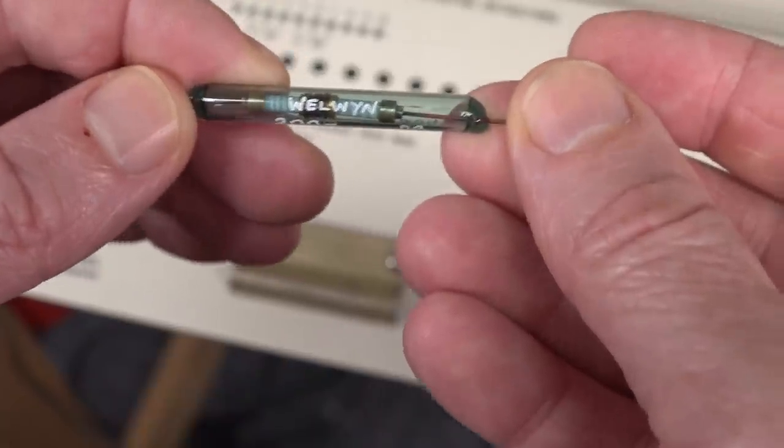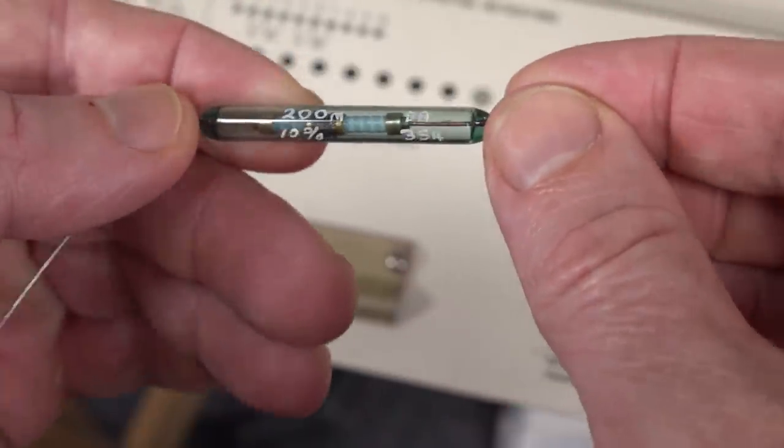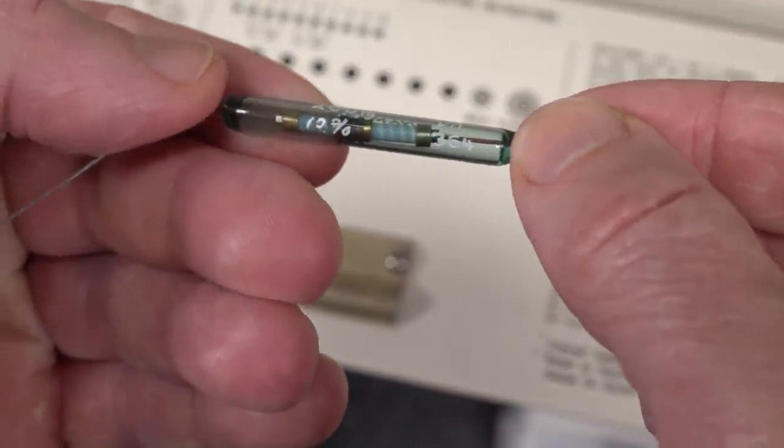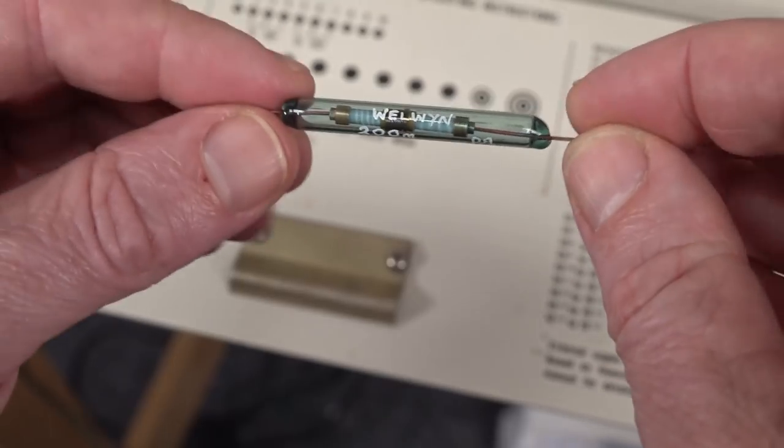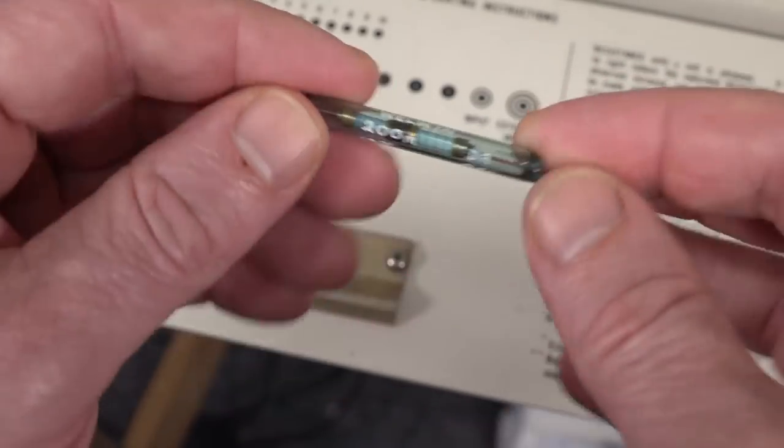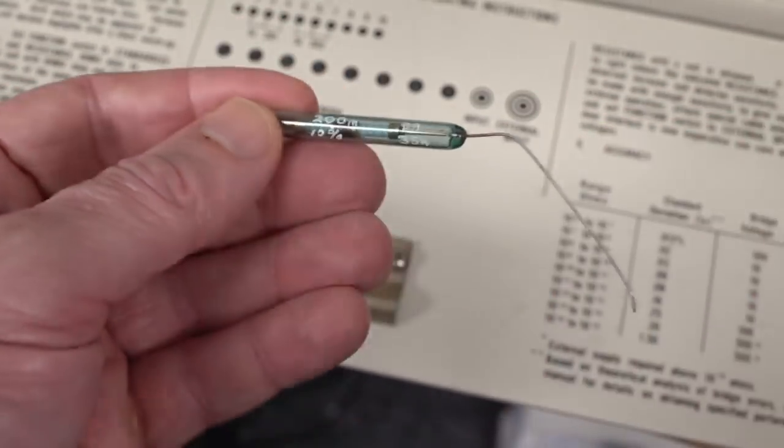So we're going to try and measure this Whirlwind 200 meg. That's not 200 milli. It's a 10% high voltage high ohmic resistor. So 200 meg. Let's see if we can dial this in.